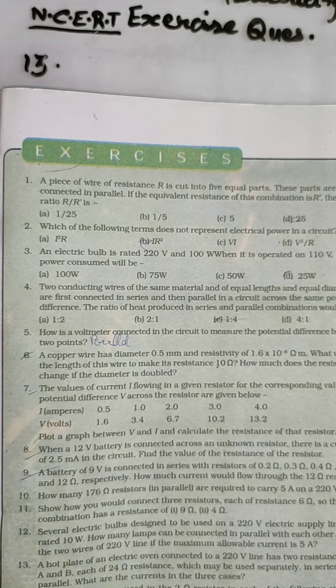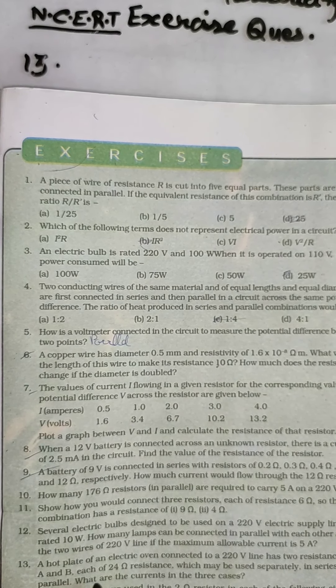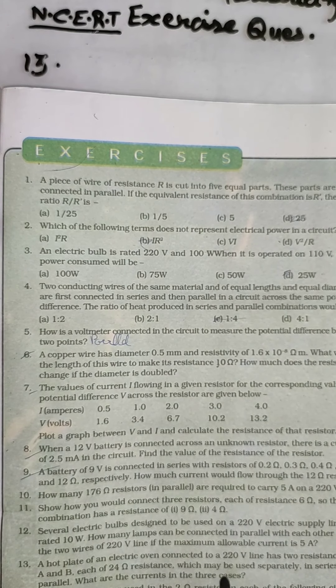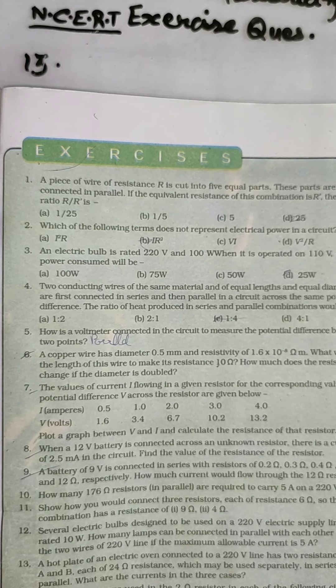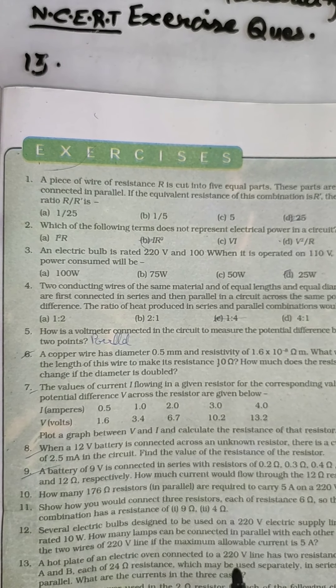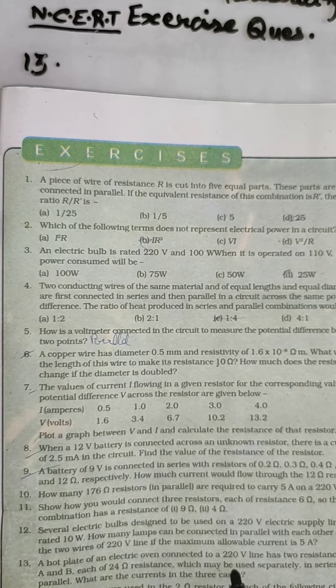Let us do question number 13. A hot plate of an electric oven connected to a 220 volt line has two resistance coils A and B. We have given potential difference 220 volt.